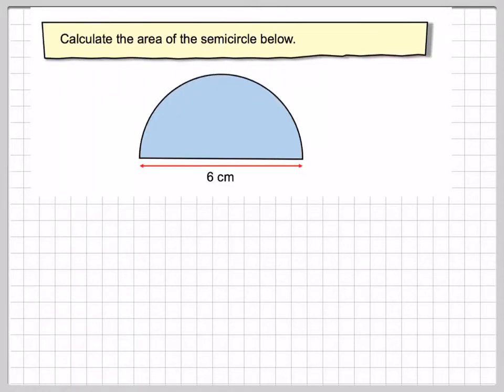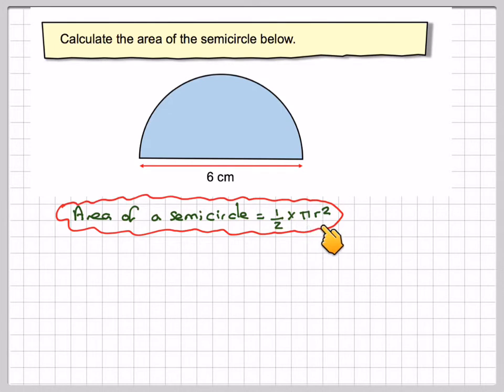Calculate the area of the semicircle below. I've got a semicircle here, but the area of a circle is pi r squared, so the area of a semicircle will be a half of pi r squared.